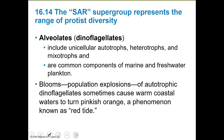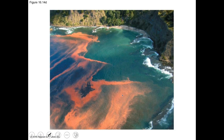Another group are the dinoflagellates, part of our Alveolates. These include autotrophs, heterotrophs, and mixotrophs, and they're common in marine and freshwater plankton. These are what we find in blooms — population explosions of autotrophic dinoflagellates that sometimes warm coastal waters and make them pinkish or orange. That's what we call red tide, which is caused by a protist, driven by runoff of nitrogen-rich fertilizers into the ocean.